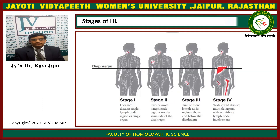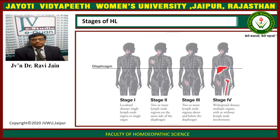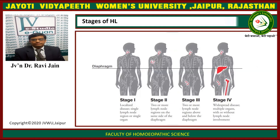There are four stages of Hodgkin's lymphoma. Stage 1: localized disease with a single lymph node region or single organ. Stage 2: two or more lymph node regions on the same side of the diaphragm. Stage 3: two or more lymph node regions above and below the diaphragm. Stage 4: widespread disease with multiple organs, with or without lymph node involvement.